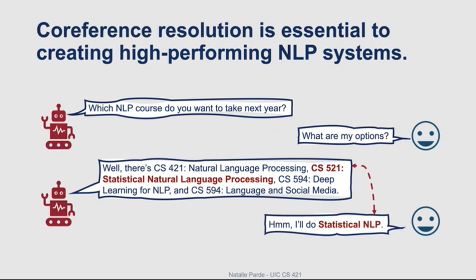What humans instead typically do to save time and reduce redundancy is refer to previously introduced entities using shorter referring expressions in the remainder of the discussion. For example, a news article might introduce someone first by their full name and then refer to that person using just their last name or their pronouns going forward.